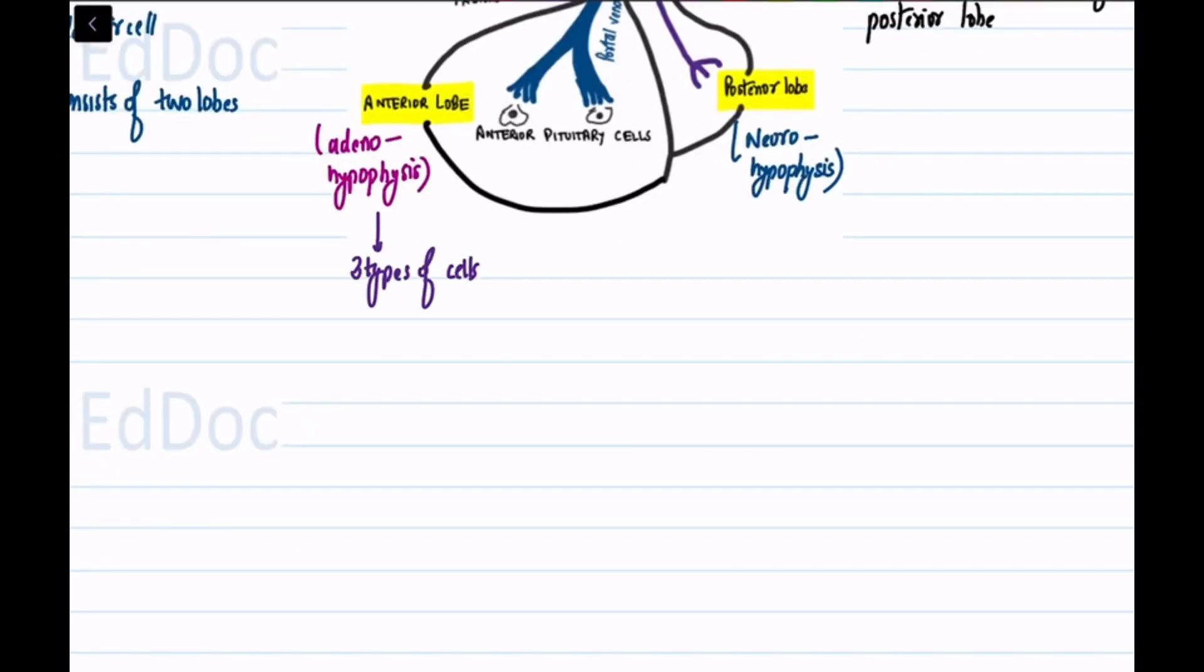When stained conventionally, the anterior lobe reveals three types of cells: acidophils, basophils, and chromophobes.